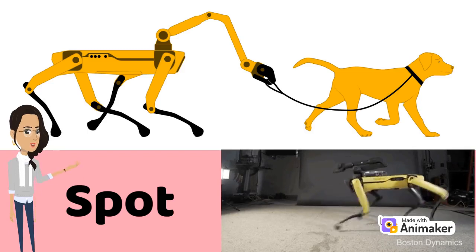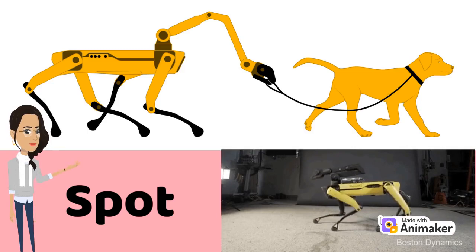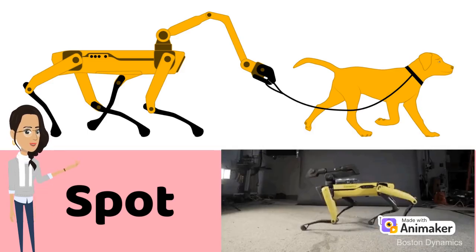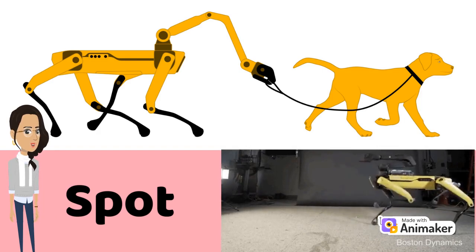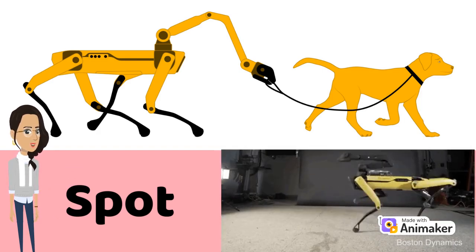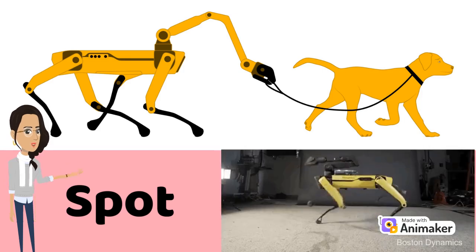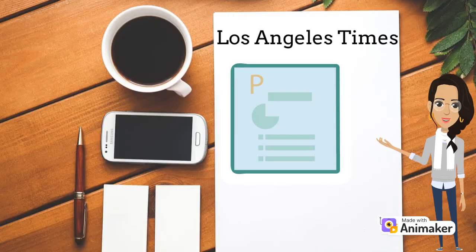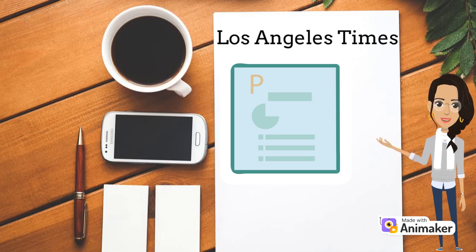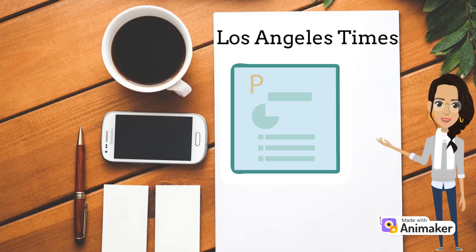Boston Dynamics has promoted Spot as a robot that can be used to navigate tough terrain and automate repetitive tasks. The four-legged robot has been adopted by many industries to carry out tasks in the toughest of environments. A robot also wrote an article on an earthquake in California on the Los Angeles Times website, gathering data from a seismograph.